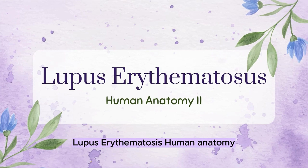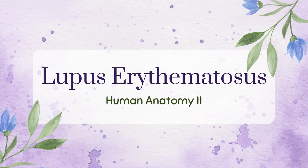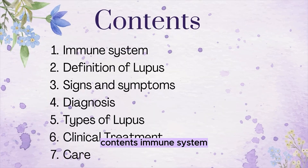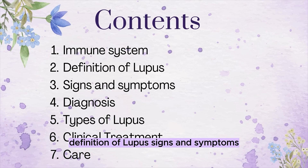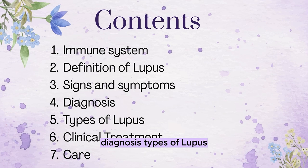Lupus Erythematosus — Human Anatomy. Contents: Immune System, Definition of Lupus, Signs and Symptoms, Diagnosis, Types of Lupus, Clinical Treatment and Care.